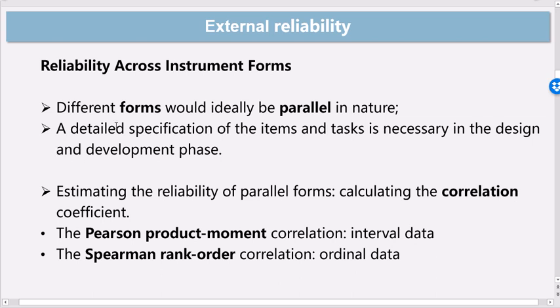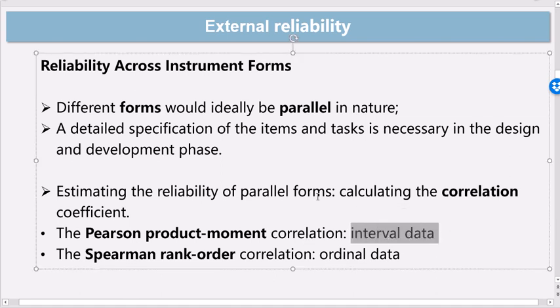So how do we estimate the reliability across instrument forms? Basically, we just calculate a correlation coefficient. For example, if you have interval data collected through your instrument or through your test, you use the Pearson product moment correlation.